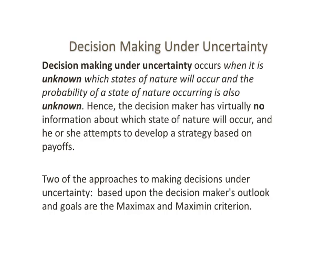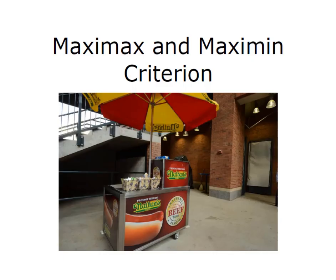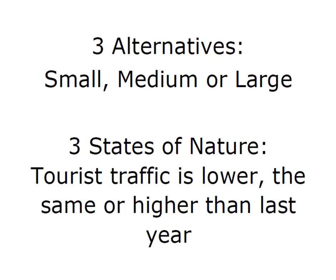Which approach a decision maker takes is often determined by their outlook and their goals. Going back to my hot dog stand example: I identified that I have three alternatives. I can open a small, medium, or large hot dog stand here on the Outer Banks. I know that I have three potential states of nature — tourist traffic is either going to be lower, the same, or higher than it was last year. I use these three alternatives and three states of nature to create a payoff table.